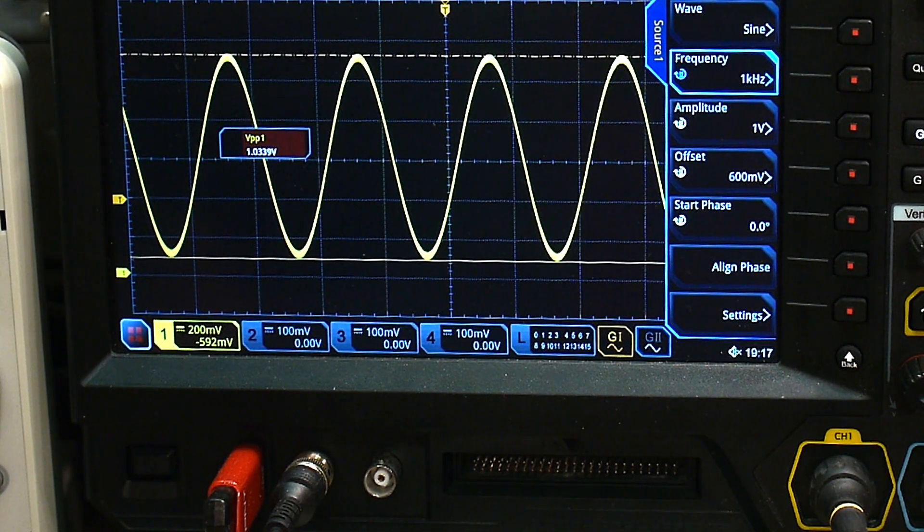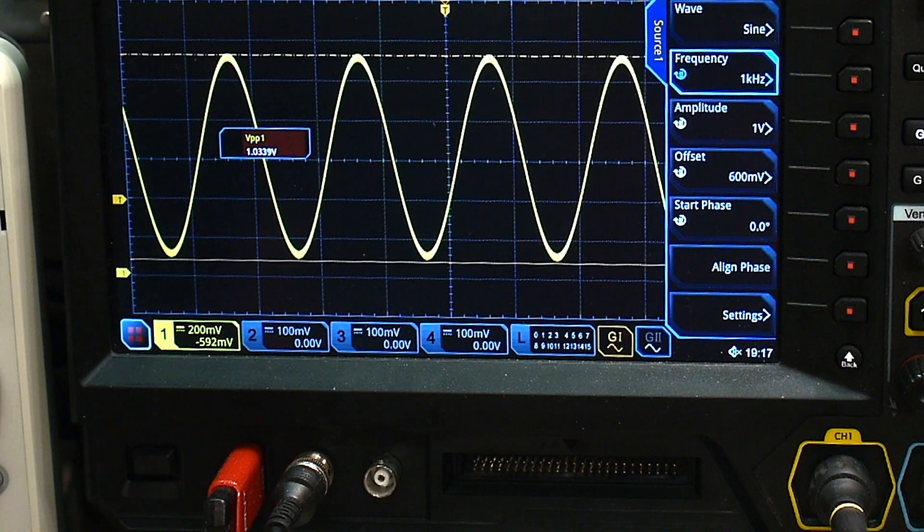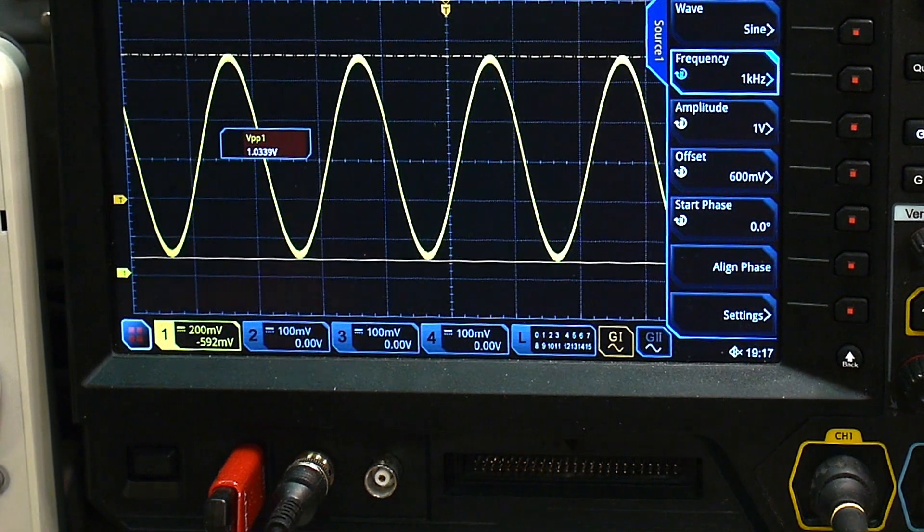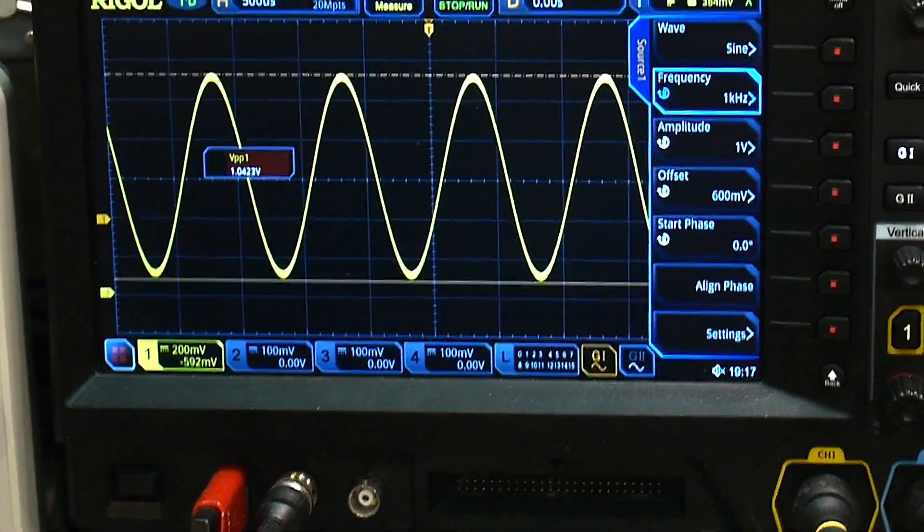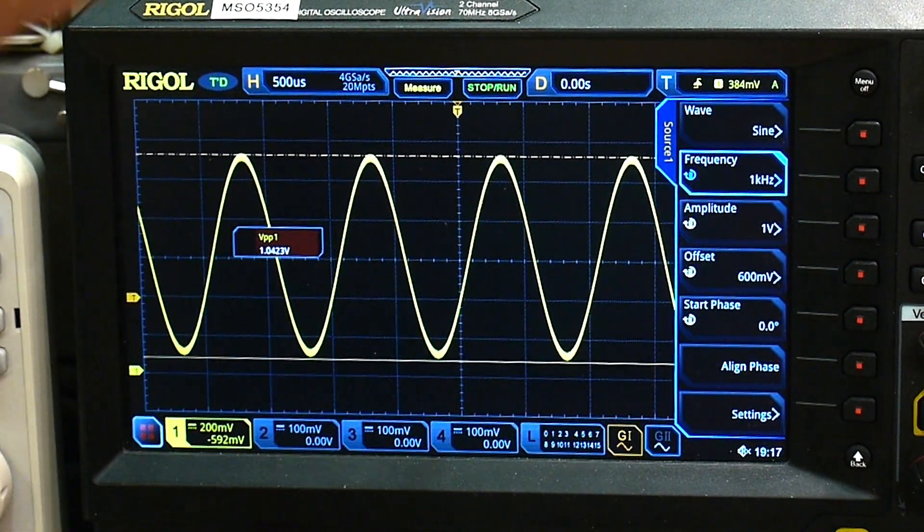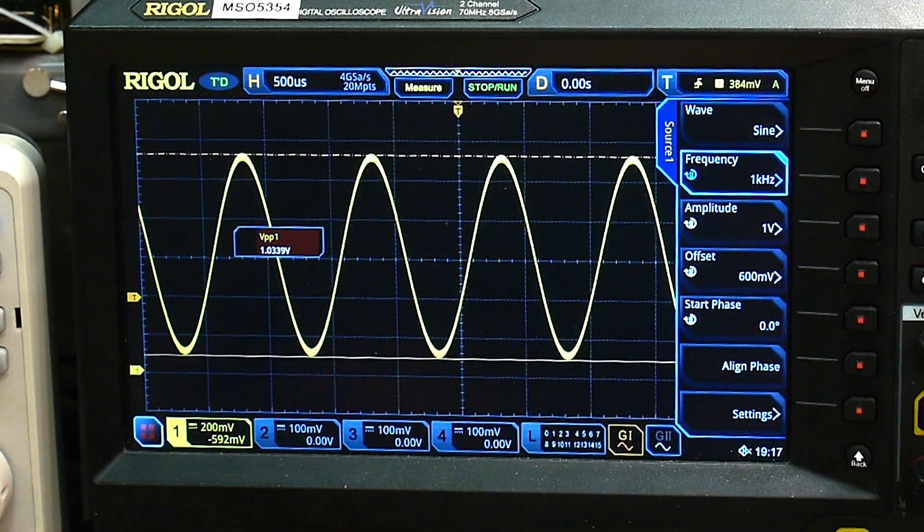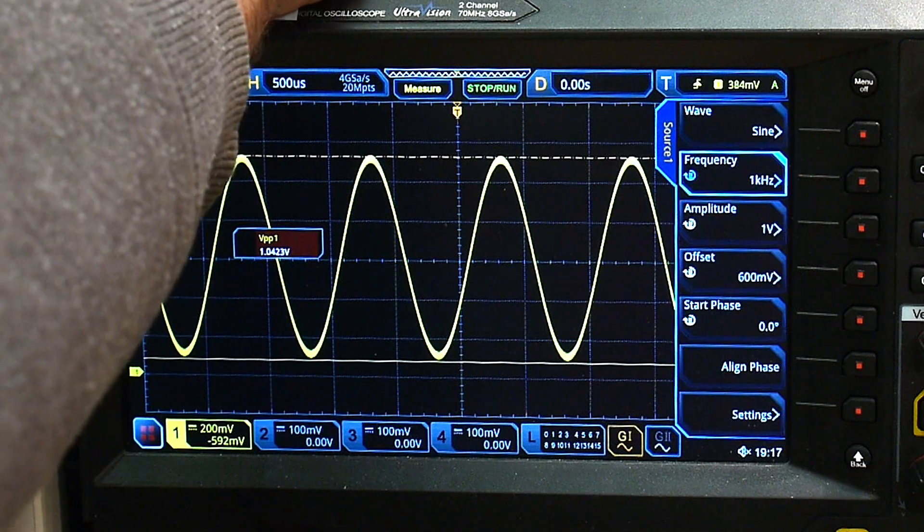So we have a one volt signal. And you can just barely see it in camera there. We have a, right there, three volts, three volts supply.